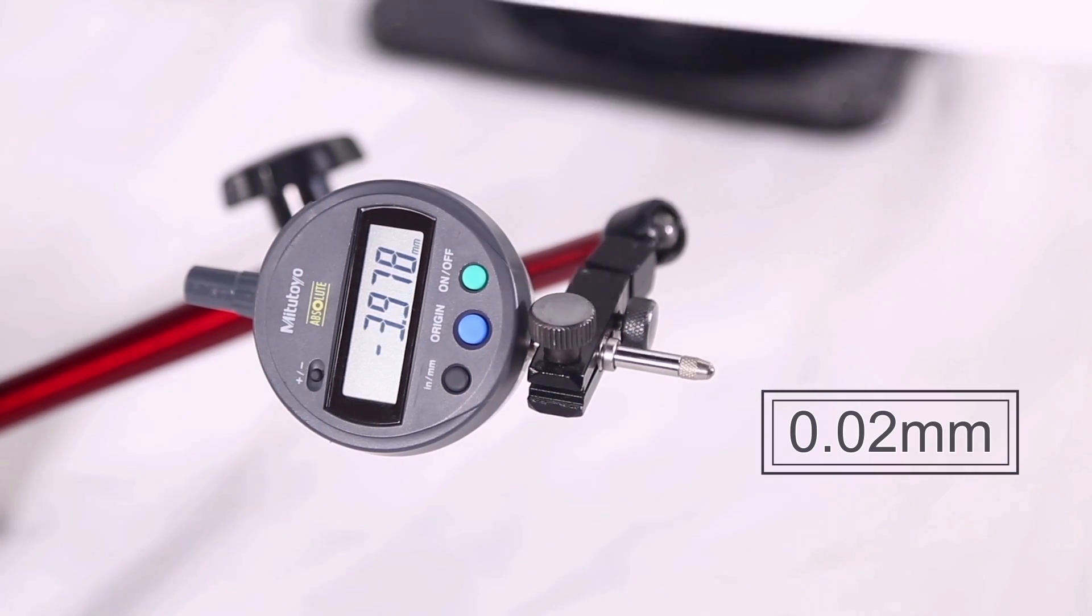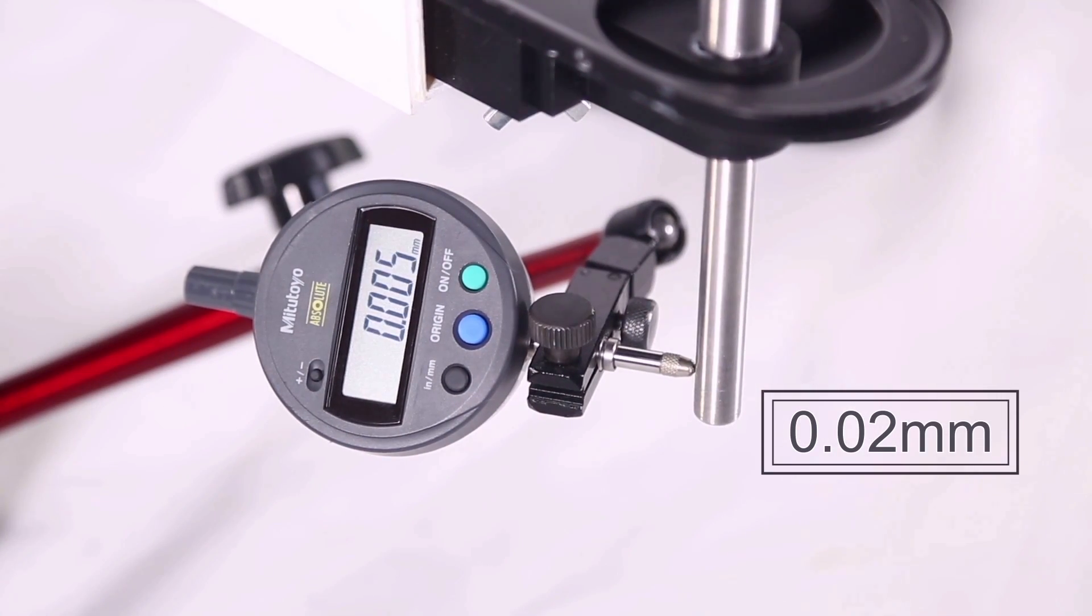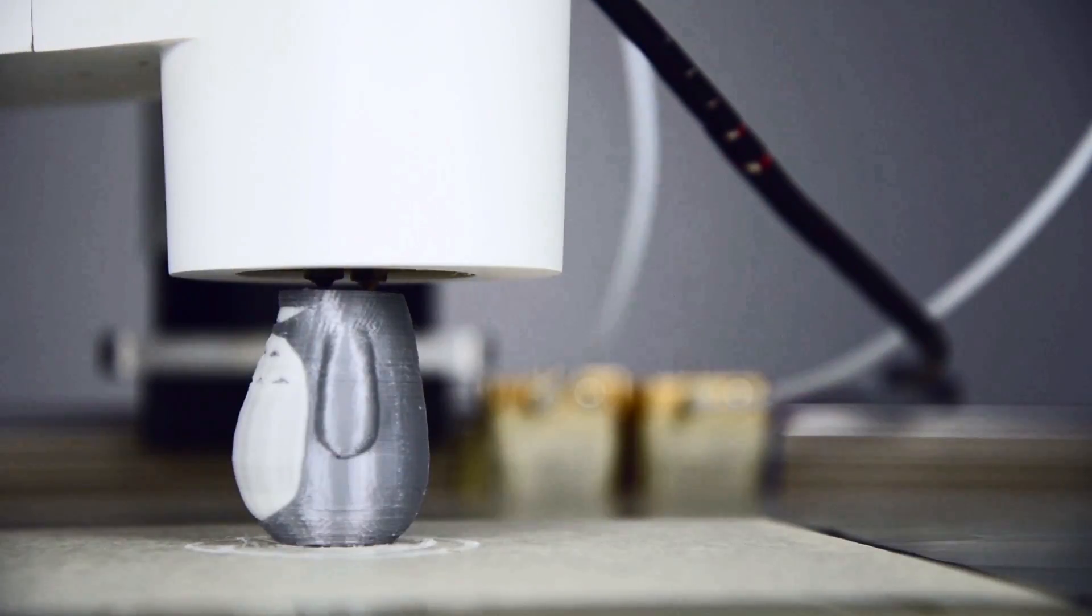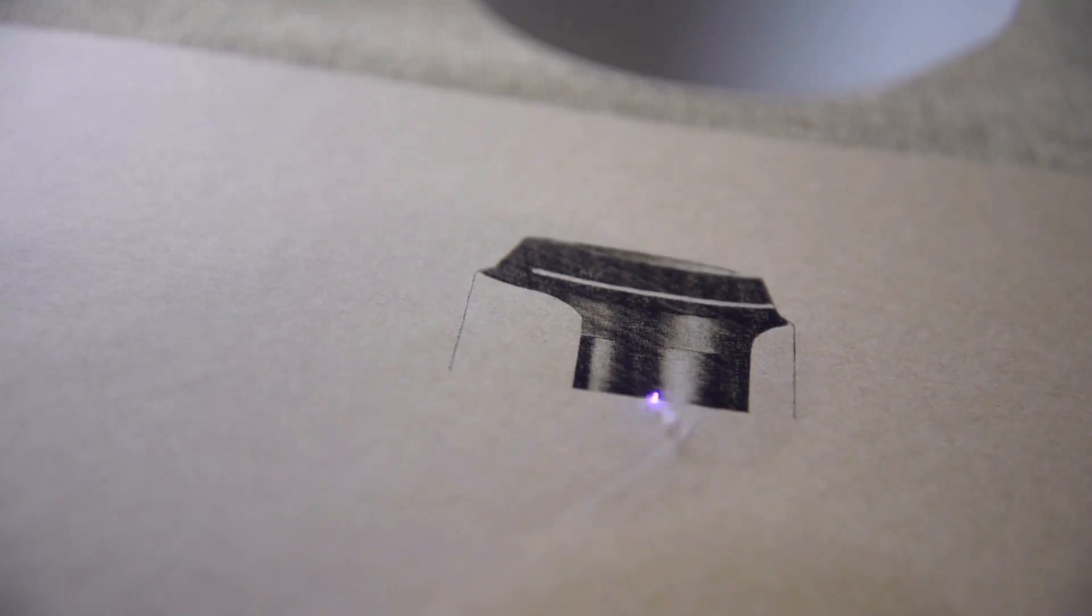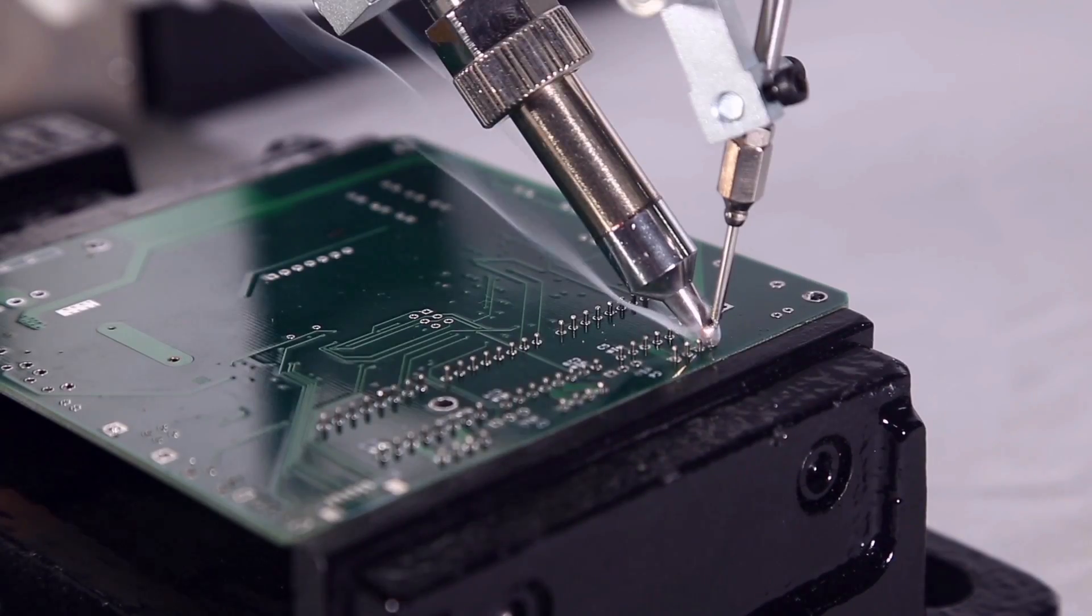Dubot M1 has 0.02 millimeters repeatability and 1.5 kilogram payload. With these standardized, easy to change heads, you can easily turn this power into productivity.